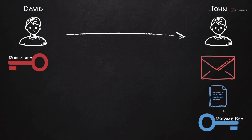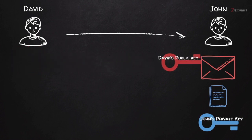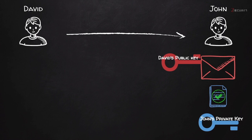Before decrypting the message with his own private key, John is going to use David's public key in order to verify the signature. The signature was created with David's private key, and John — who doesn't have David's private key — uses David's public key to verify it. If the message was not modified, the verification will be successful. Because if even one letter gets modified, David's public key will not verify the signature.